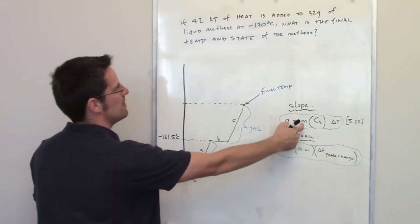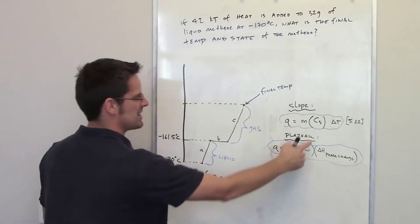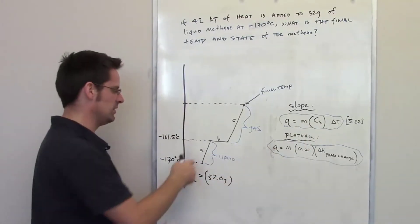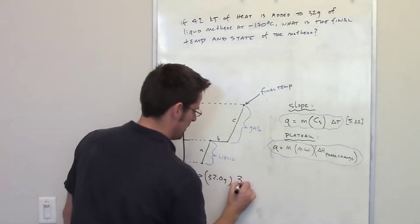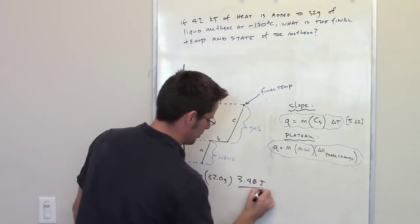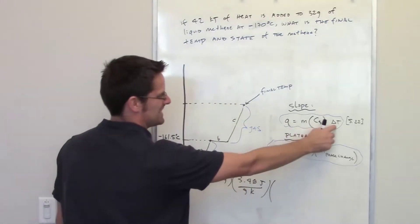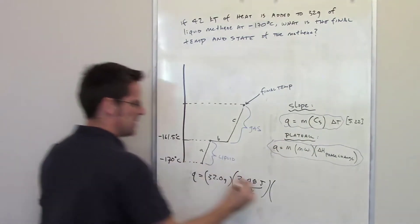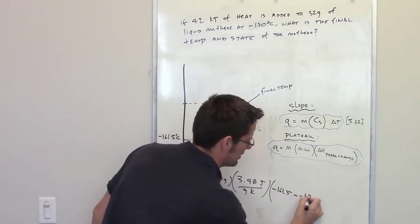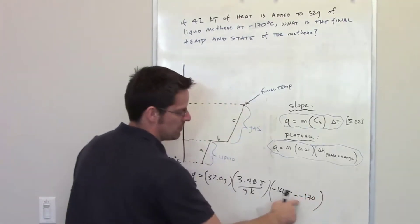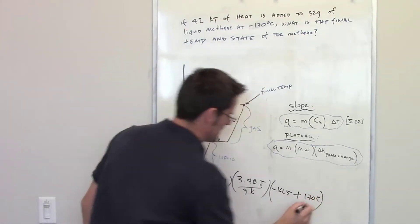Q equals the mass I've been given, which is 32 grams, multiplied by the specific heat of methane. The specific heat of liquid methane is given to us in the problem - it's 3.48 joules per gram Kelvin. Then I'm going to have to multiply that by delta T, which is the difference in temperature: negative 161.5 minus a negative 170. And if you minus a minus, it's like plussing.